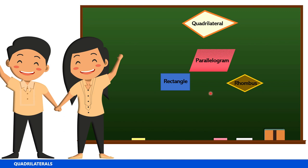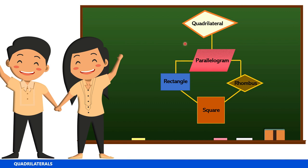We have discussed different types of quadrilaterals: parallelogram, rectangle, rhombus, and square. Rectangle, rhombus, and square are all parallelograms, and they are all quadrilaterals. The property of a rectangle — four right angles — is also present in a square. The property of a rhombus — four congruent sides — is also present in a square. Now, how about quadrilaterals that are not parallelograms?